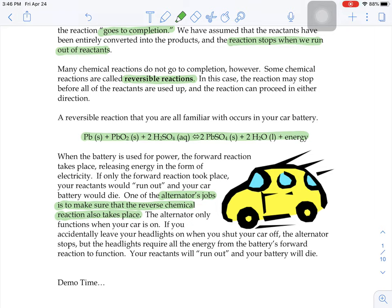So if you accidentally leave your headlights on when you shut your car off, the alternator isn't running because the car isn't on. But the headlights require all the energy from your battery's forward reaction to function. And so the headlights on your car will remain on. The battery will keep them running until that battery runs out of juice and all the reactants run out and it dies.